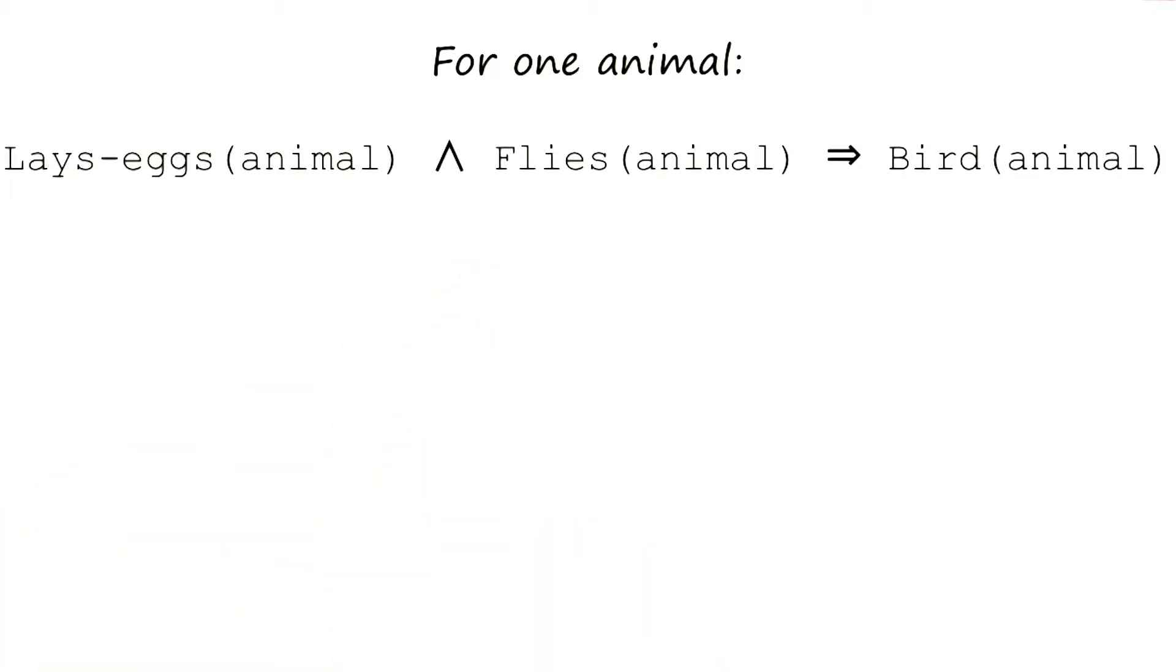Before we show you a computationally more feasible way of proving the truth value of sentences in logic, we should point out that so far we have been using only propositional logic. Propositional logic is sometimes also called zeroth order logic. The key aspect of propositional logic is that it does not have any variables.